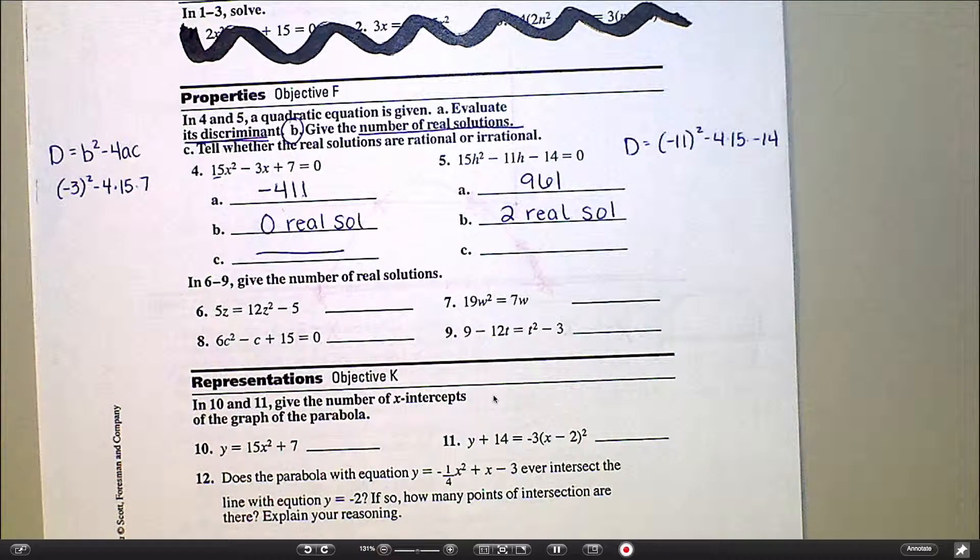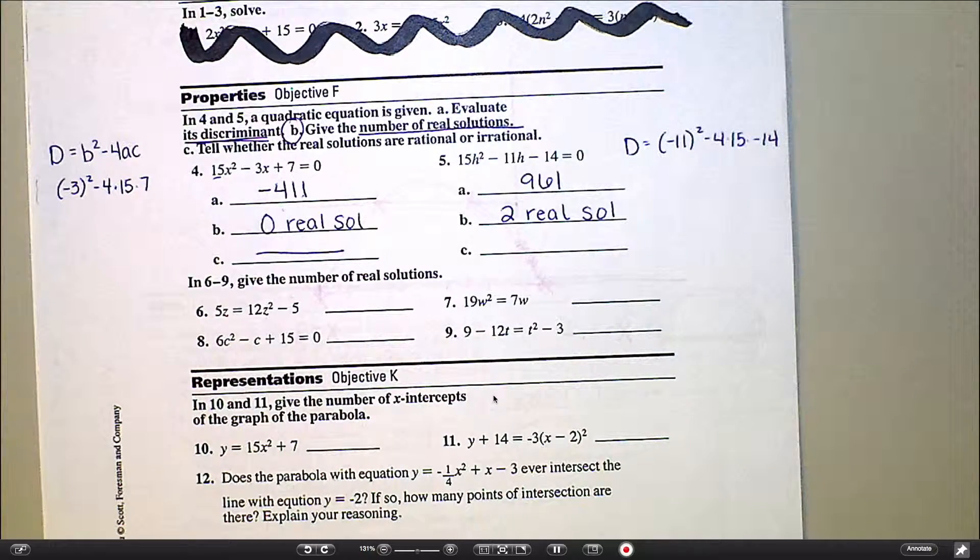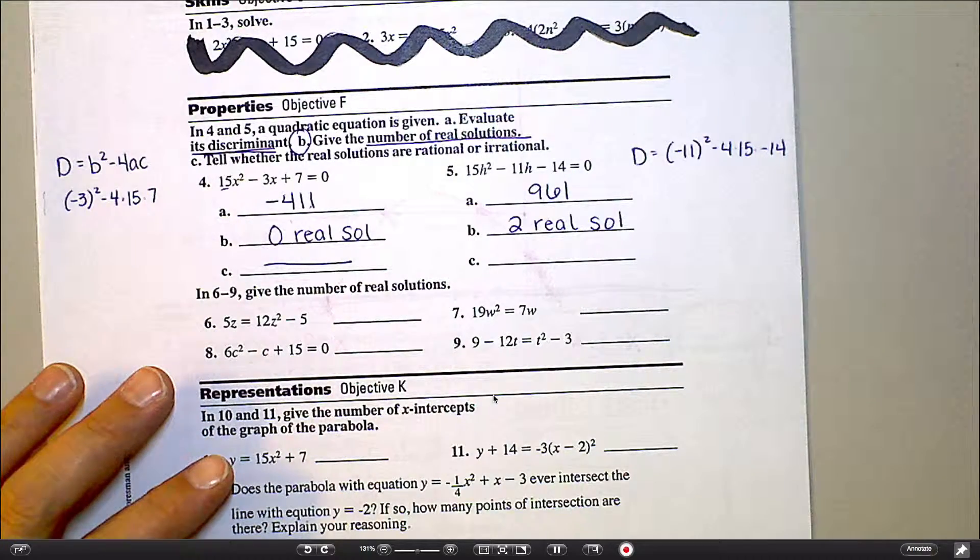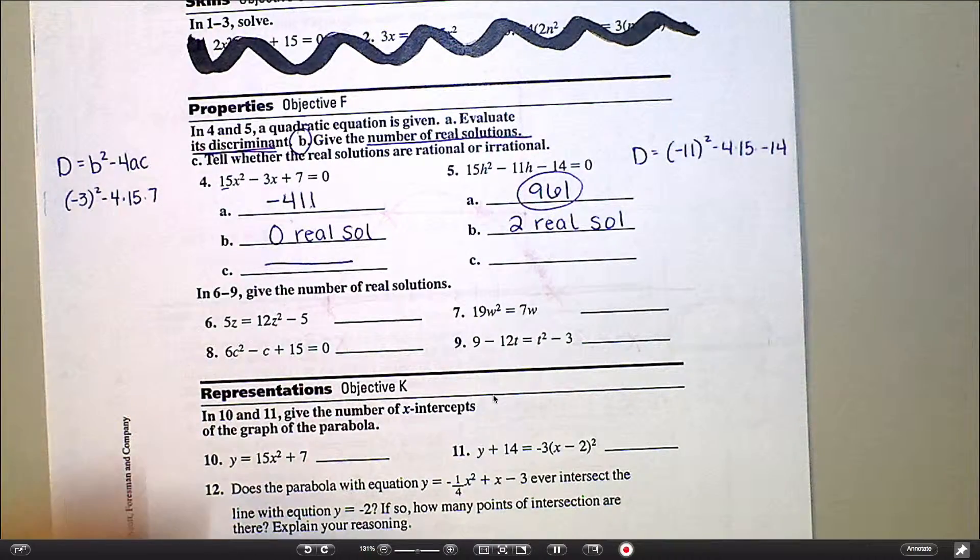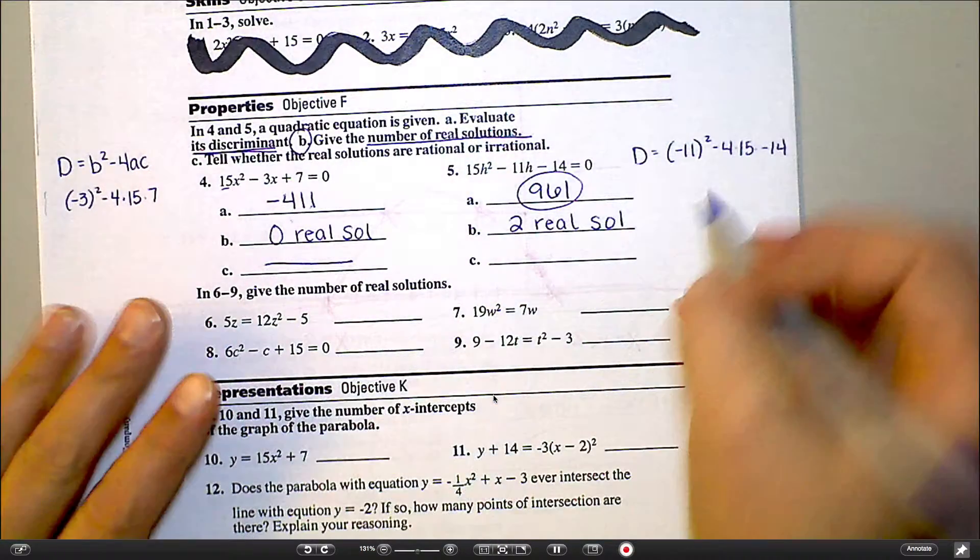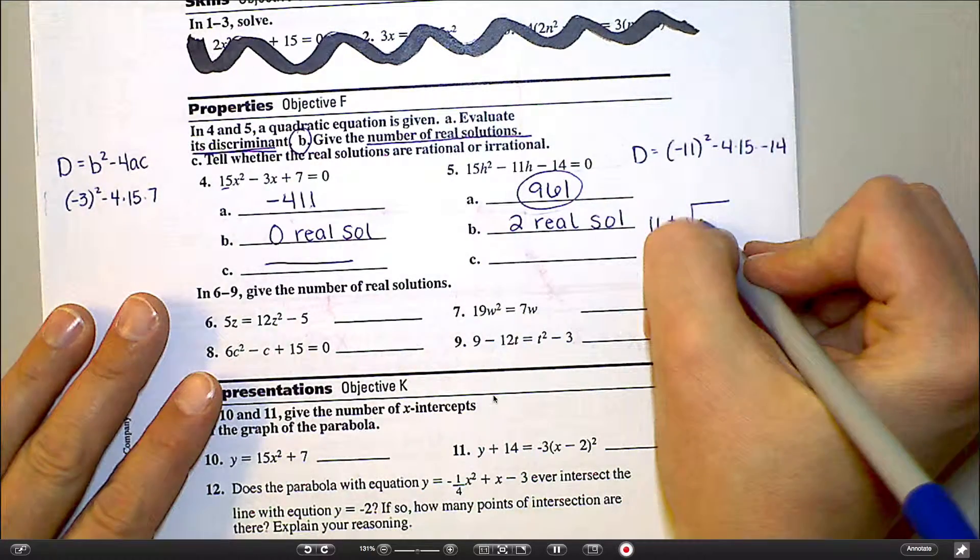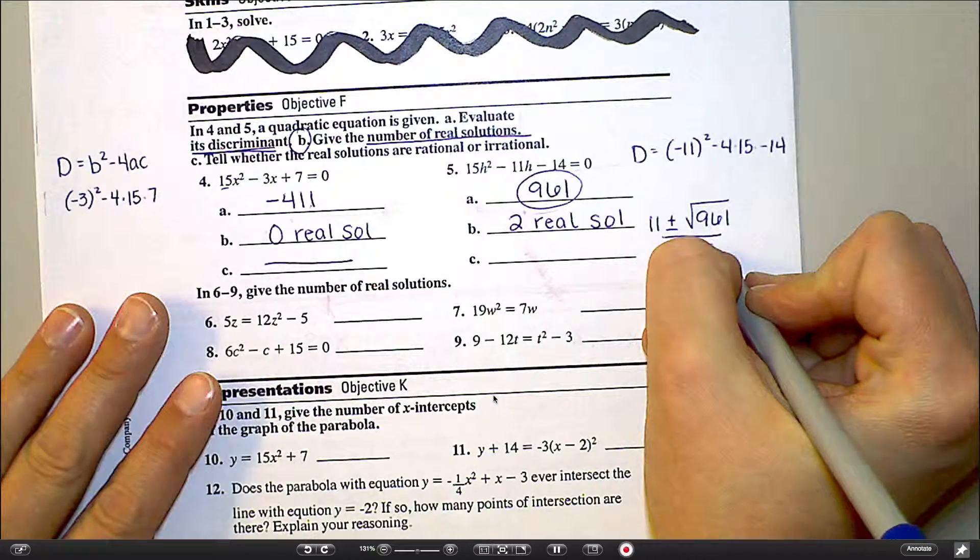So now I want to know, are they rational or irrational? And what that's really asking is, if I were to go through the whole quadratic formula with this and actually find the roots, would the answers come out as clean, happy whole numbers or would they come out as crazy decimals that go on and on forever? And here's how you tell that. That's controlled by that square root in the quadratic formula. And this is the number that's going to be living under the square root. So if I were to do the quadratic formula, you don't really have to do the whole thing, but it would look like this: 11 plus or minus the square root of, and I already know this is the number that comes from under the square root, over 2 times 15, so it would be over 30.